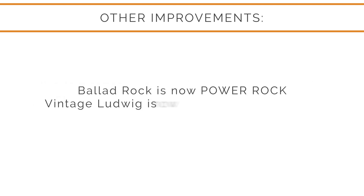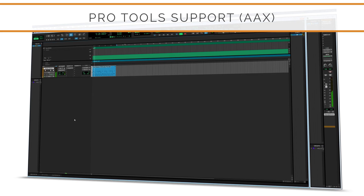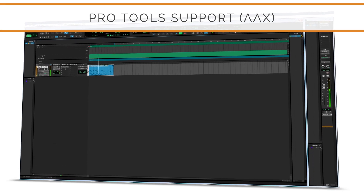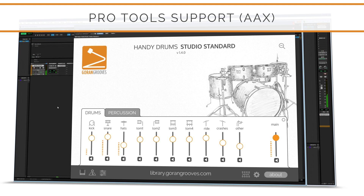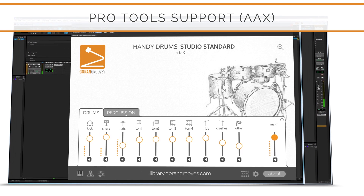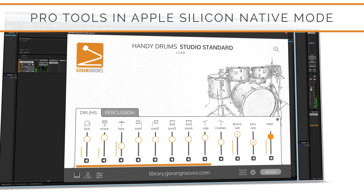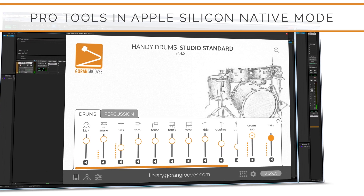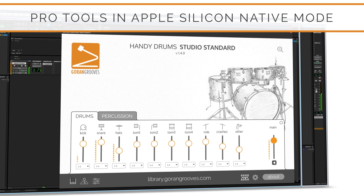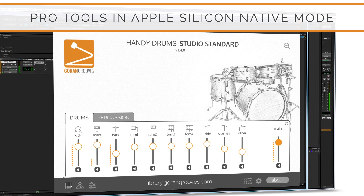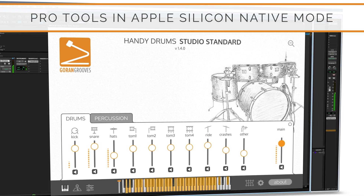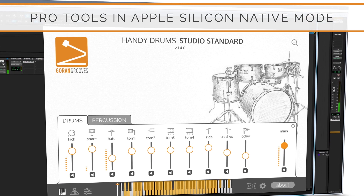We renamed Ballad Rock to Power Rock and Vintage Ludwig to Vintage Standard plugins, so if you own one of those, check out the relevant info before updating. For all Pro Tools users, you can finally take full advantage of Handy Drums on both Windows and Mac. This version is compatible with the upcoming Pro Tools edition where you can use our plugins running Pro Tools on M1/M2 Macs in Apple Silicon native mode. They are also compatible with current Pro Tools versions and can run on Intel Macs and in Rosetta mode on M1/M2 Macs.